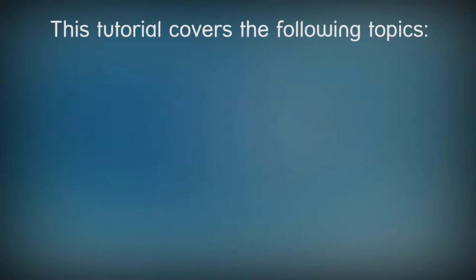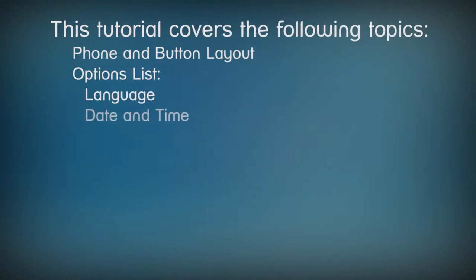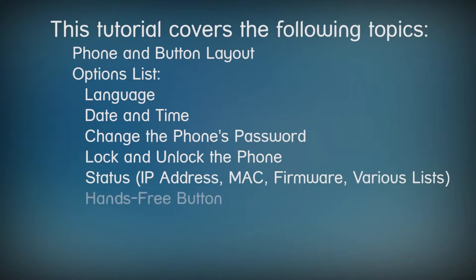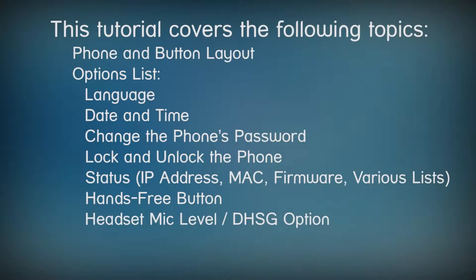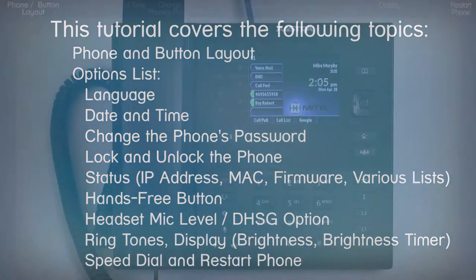In this tutorial, I'll cover the following topics. We'll take a quick look at the layout of the phone, then go through a series of options where you can choose a language, modify how the date and time are displayed, change the phone's password, lock and unlock the phone, check the status of the phone, define how the hands-free button works, adjust the headset microphone level, select DHSG, select a ringtone, change the brightness of the LCD screen and brightness timer, and set up speed dial and restart the phone.